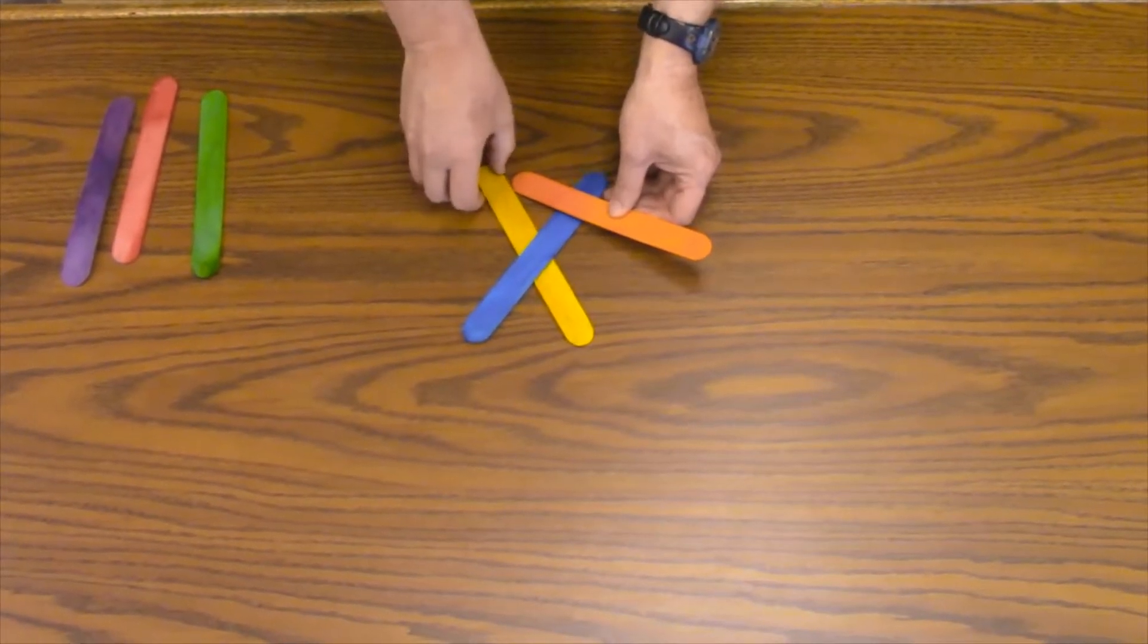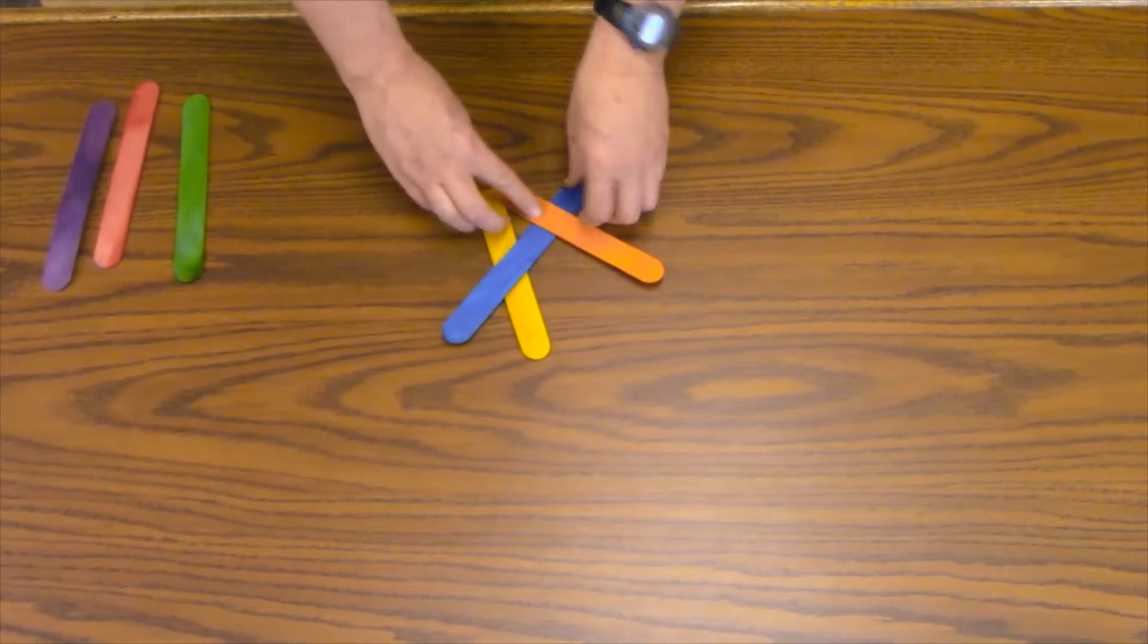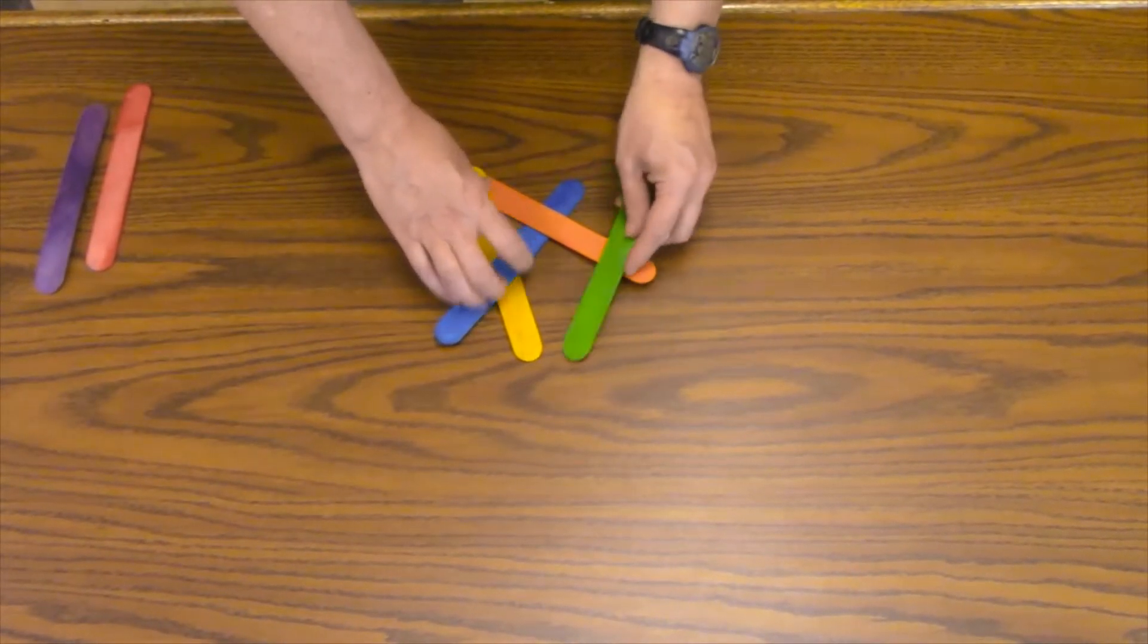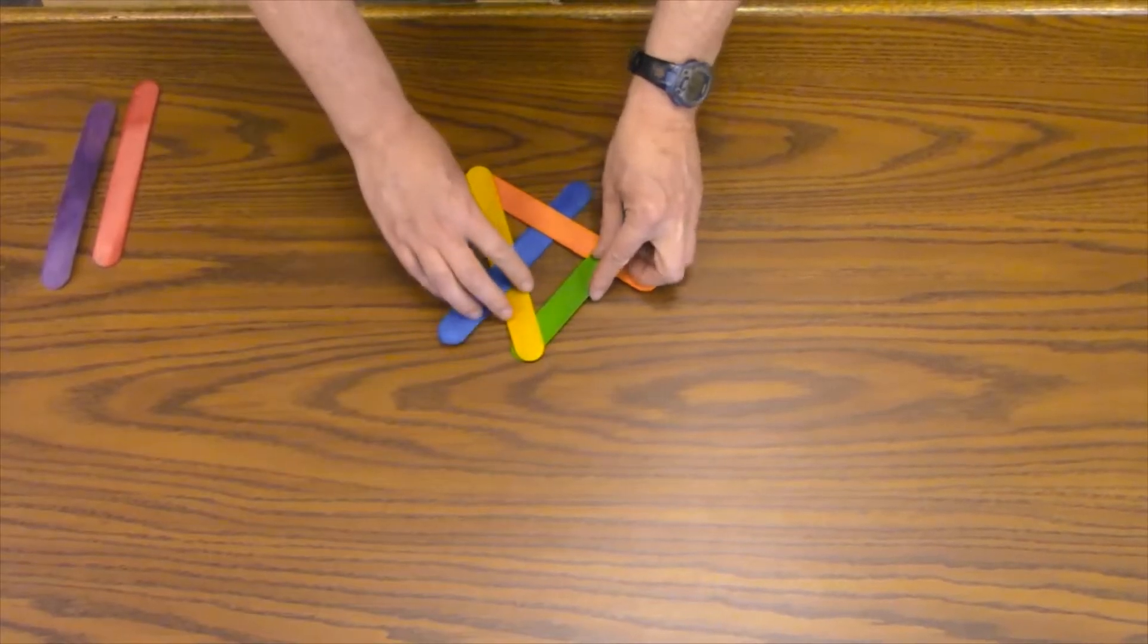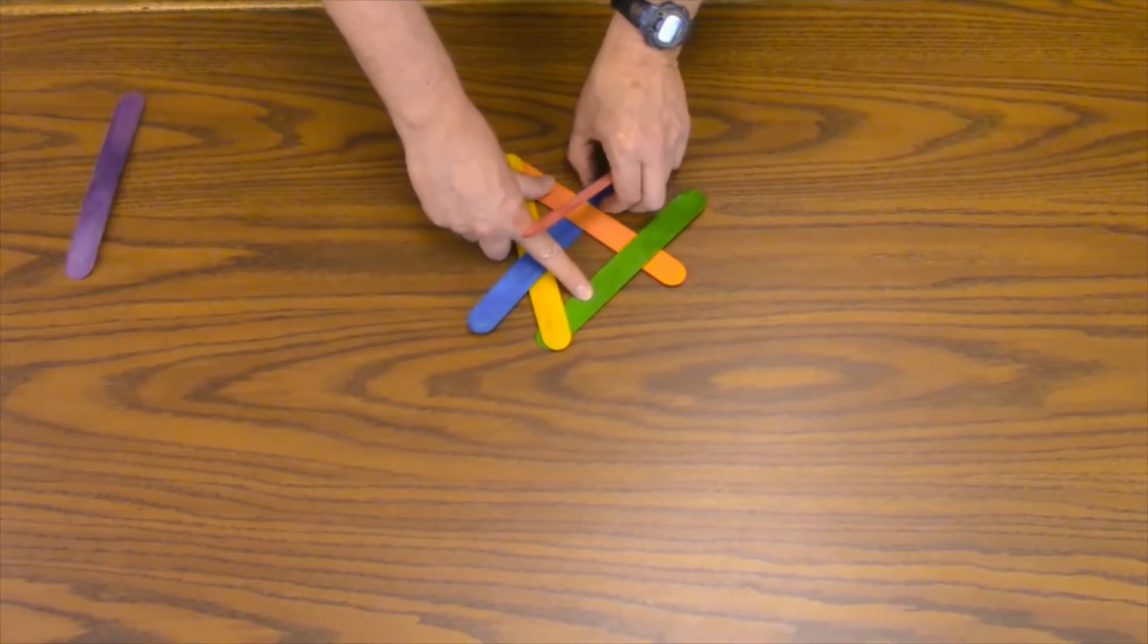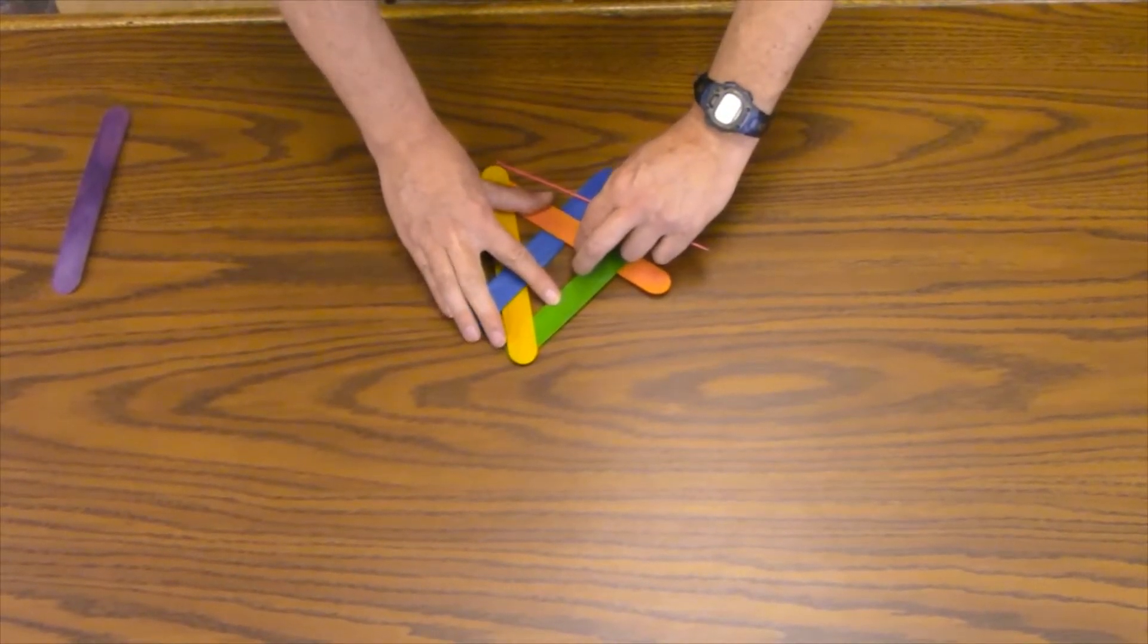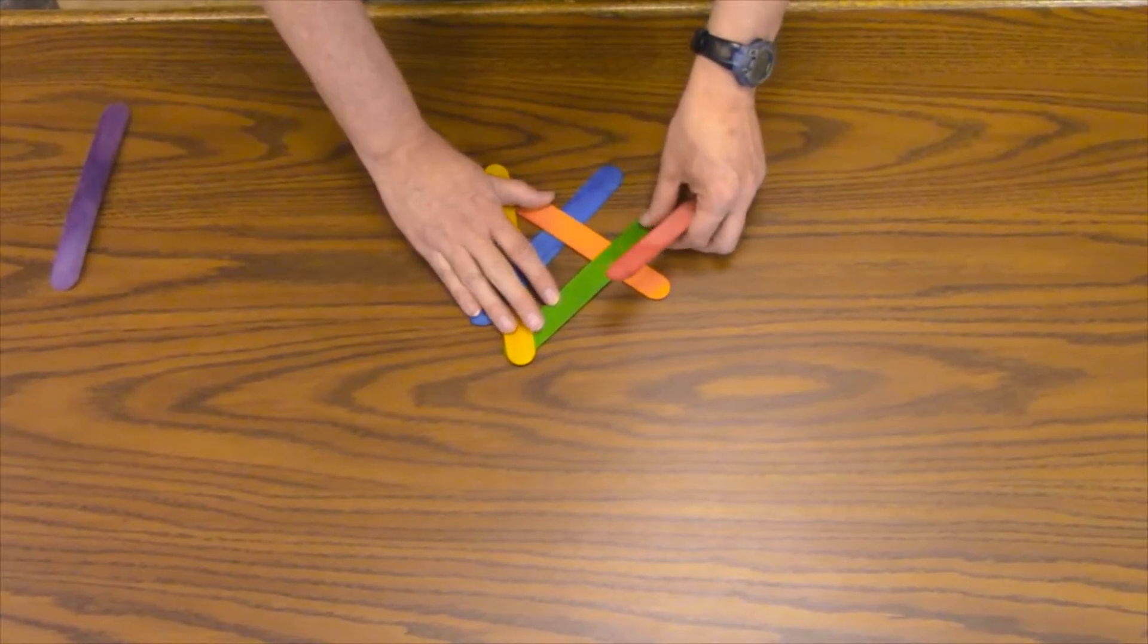The orange stick goes under one end of the yellow. You take another stick, it goes on the other end of the yellow on top of the orange. Get another stick. The start is always the hard part. So you might have to shuffle the sticks around a little bit.